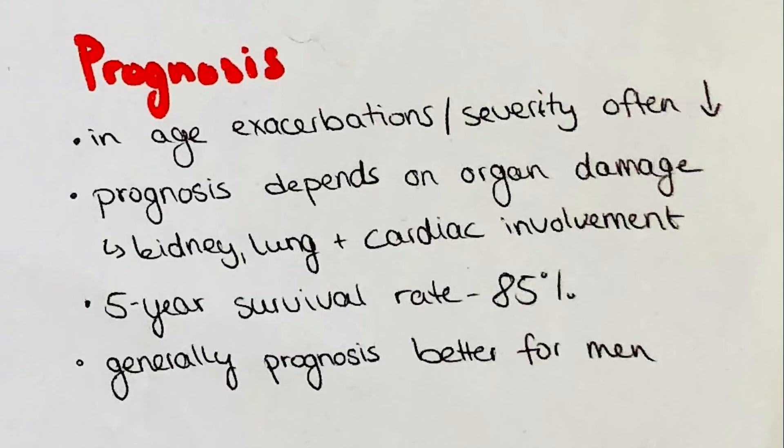The prognosis of systemic sclerosis depends on the organ damage, especially for the kidneys, lungs and heart. Generally the 5-year survival rate at the point of diagnosis is 85%, and it is generally observed to be better for men than for women. Also worth mentioning is that often with age, the frequency, duration and severity of exacerbations decreases.